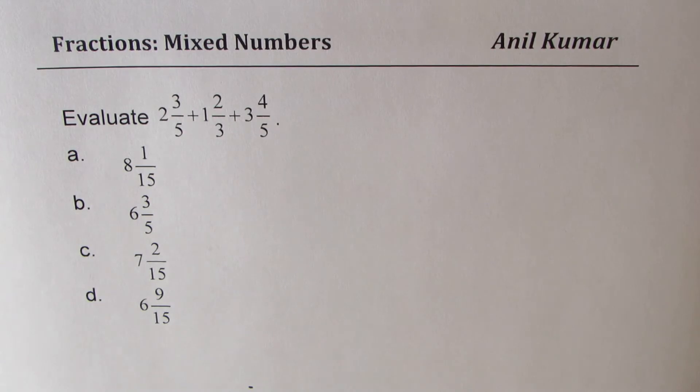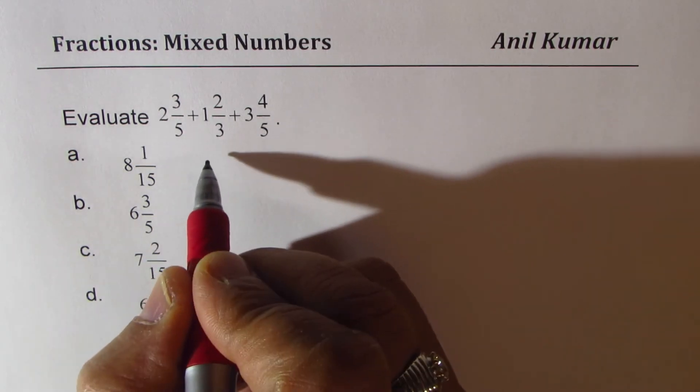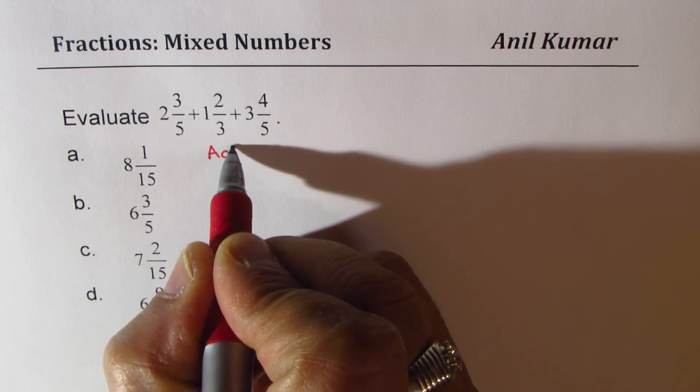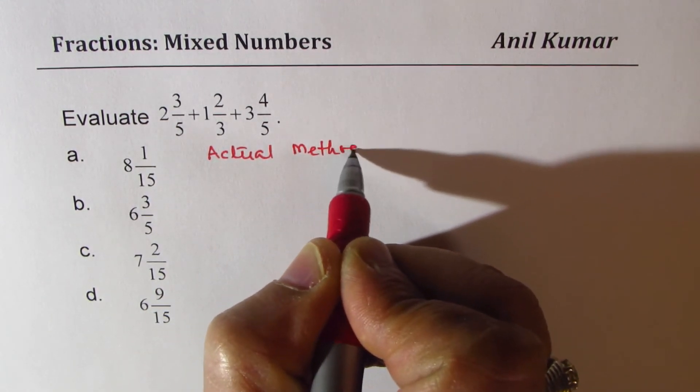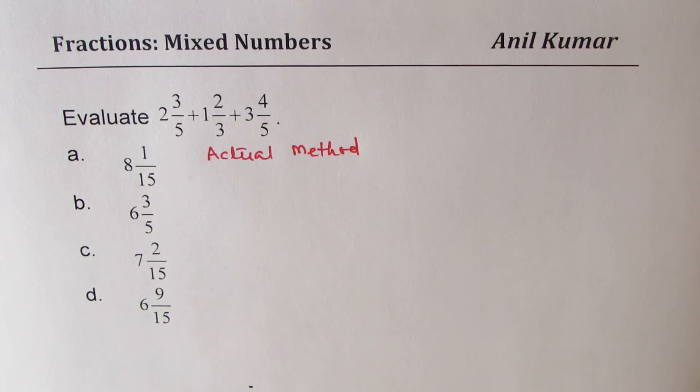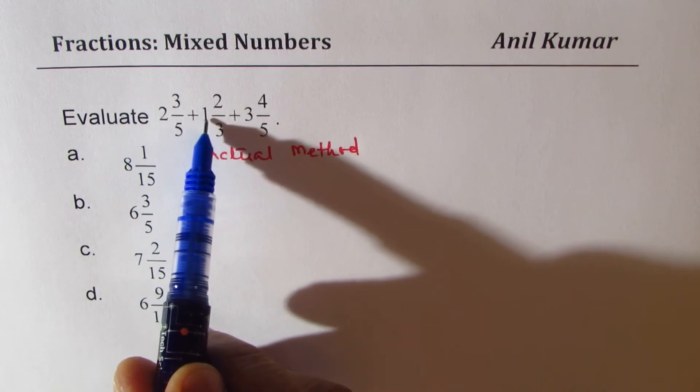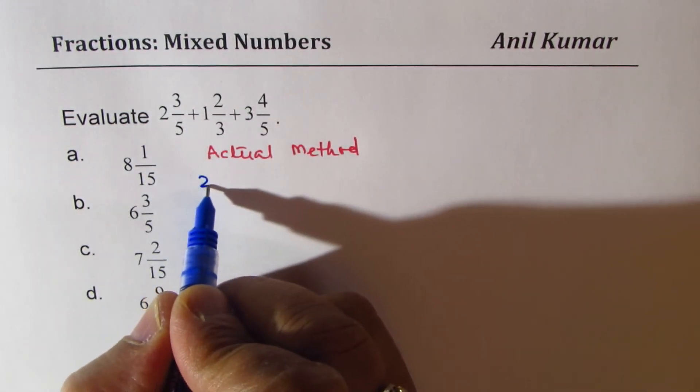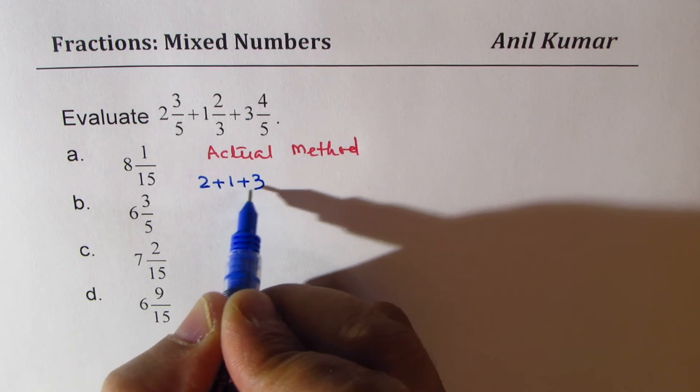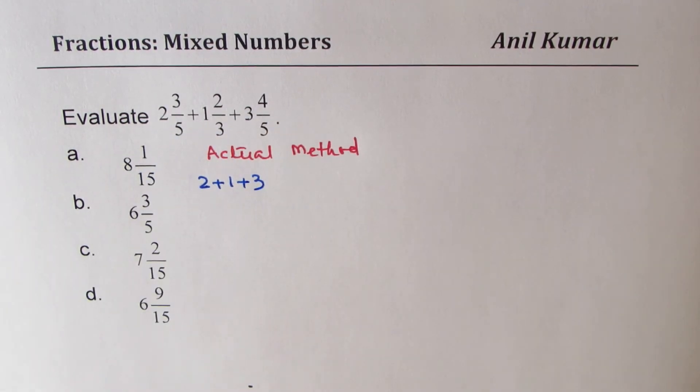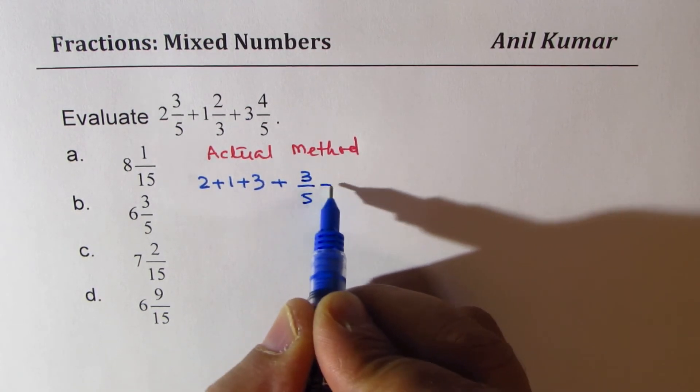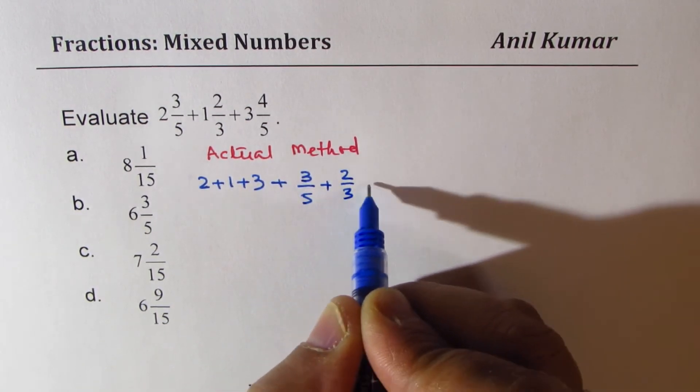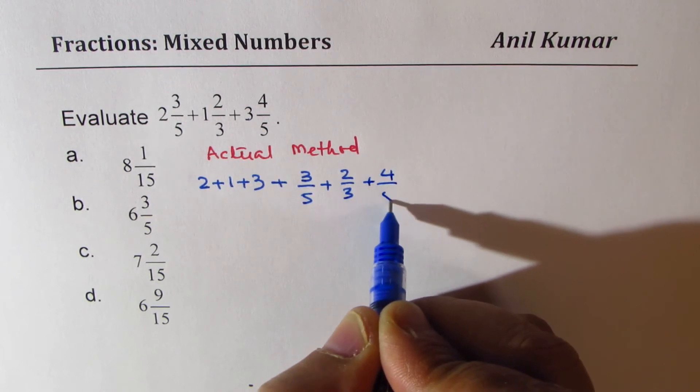Now, what we will do is we'll first do the actual method. We should understand the method first. Some of you may not know it. So the actual method here is separate the whole numbers. So we have to do 2 plus 1 plus 3. Now you add the fraction parts, which is 3/5 plus 2/3 plus 4/5. Does it make sense?